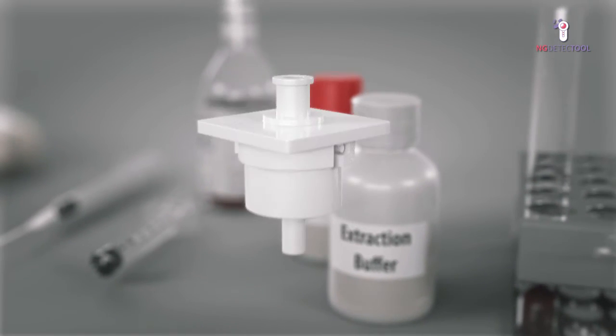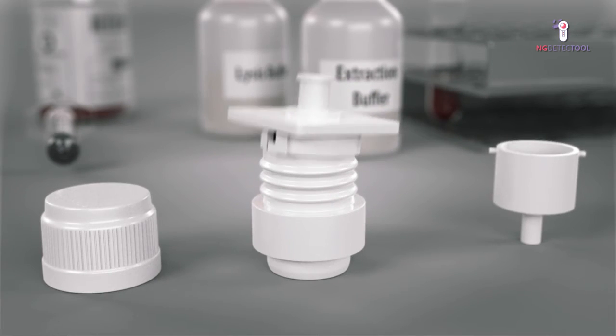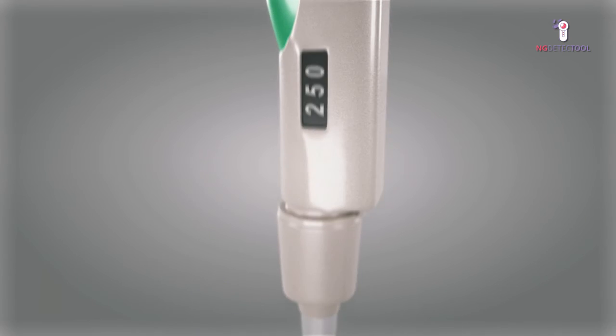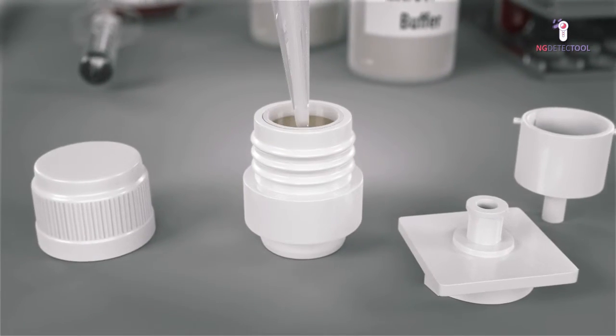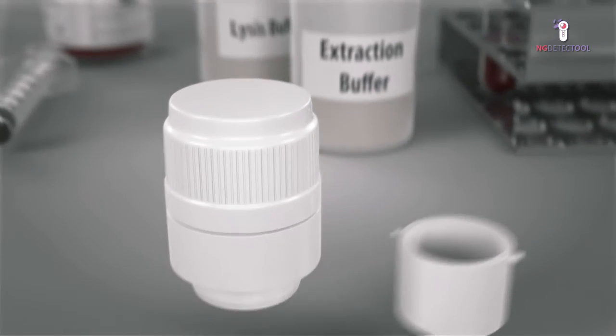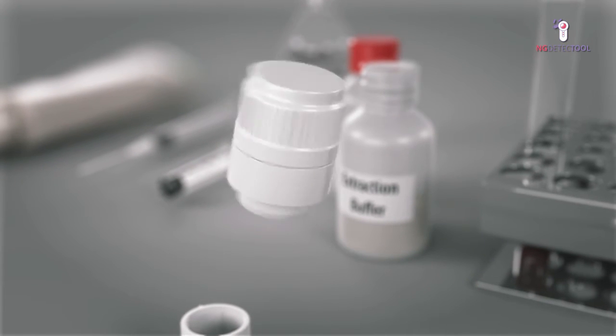Once the sample has passed through the filter, unscrew the lower part of the device. Transfer the filter into the tank and remove the upper part. Then add 250 microliters of the extraction buffer to the cup and screw on the cap. This pushes the extract through the filter into the tank where the dried conjugate is located. Shake slightly to dissolve the conjugate.